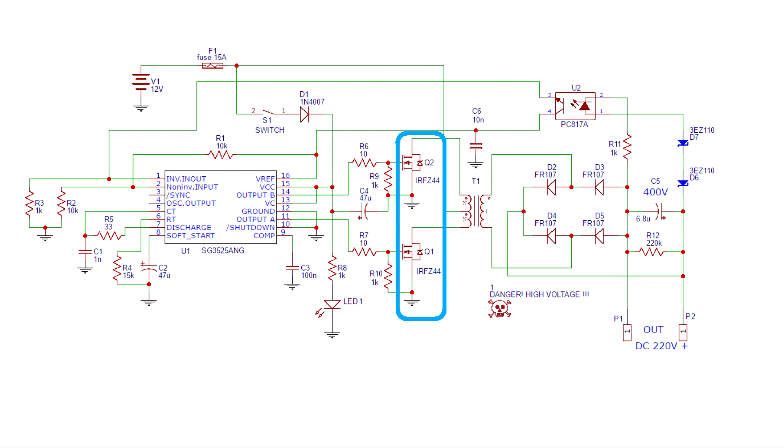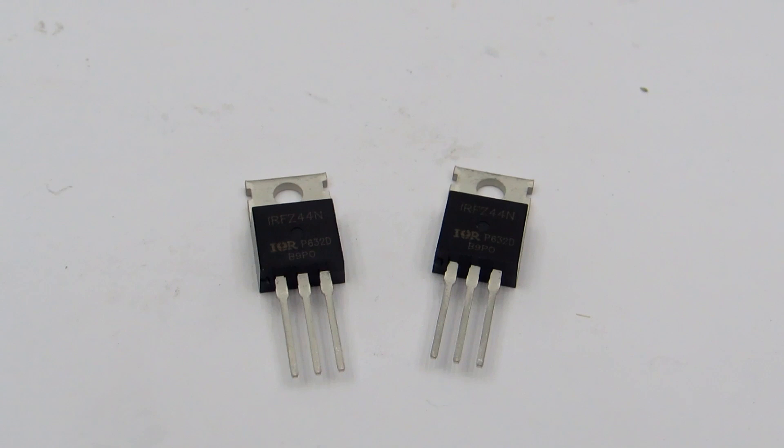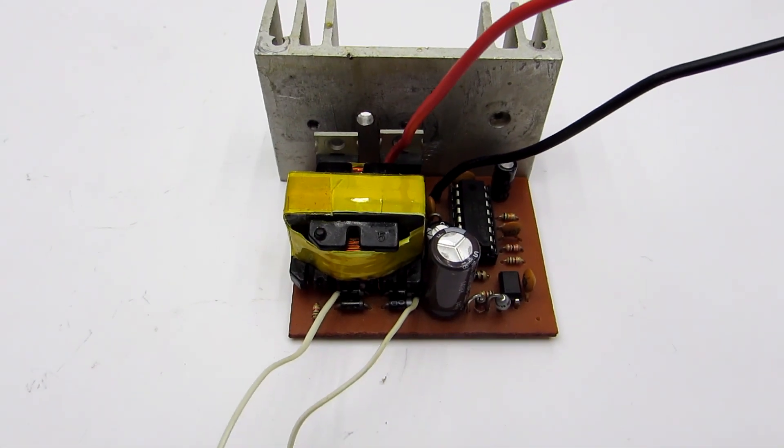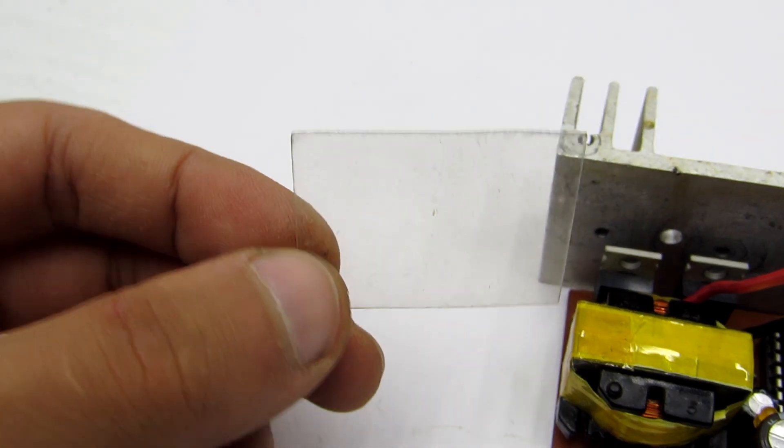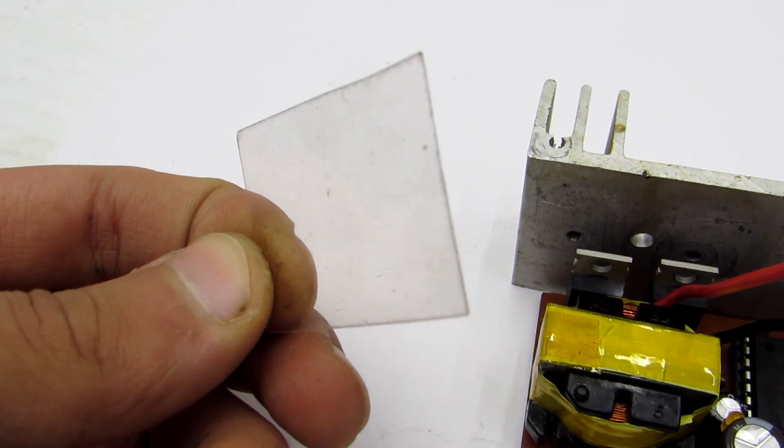In this sample, field effect transistors are IRFZ44, although it is possible to use more powerful ones. FETs are installed on a common radiator, but they are isolated from it by mica or any other electrical insulating, heat-conducting material.